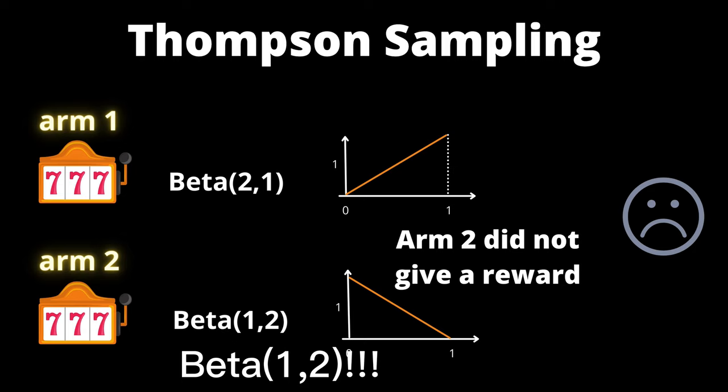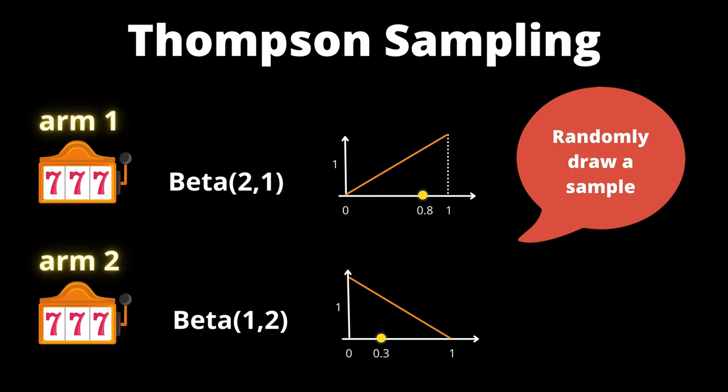At time step 3, again, let's randomly draw a sample from each distribution. Assume we are drawing 0.8 for arm 1 and 0.3 for arm 2. We play arm 1 because 0.8 is greater than 0.3.